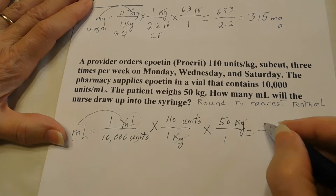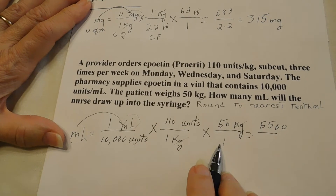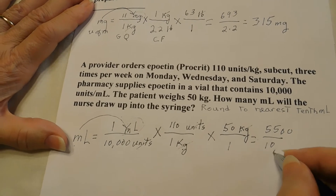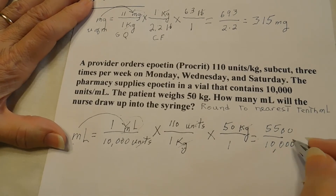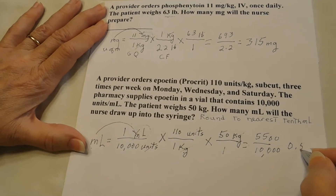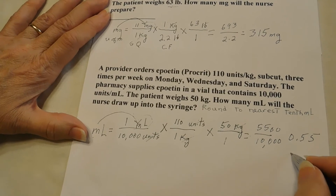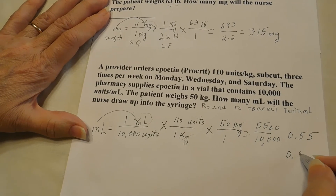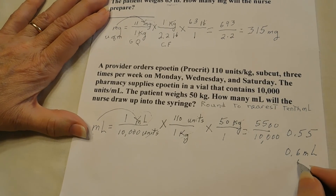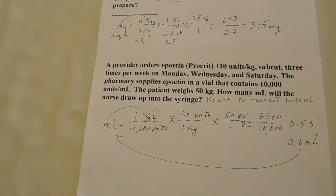We multiply the numerators together and get 5,500. We multiply the denominators together — 10,000 times 1 times 1 equals 10,000. Calculating that out, we get 0.55. Rounding to the nearest tenth gives us 0.6. So the answer is 0.6 milliliters, because that is what we're looking for.